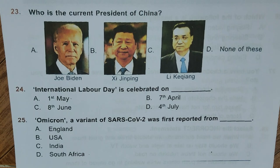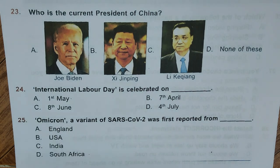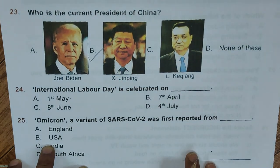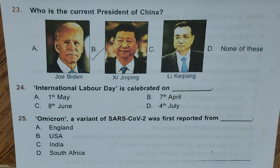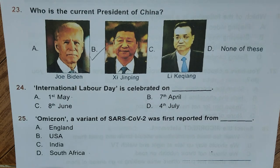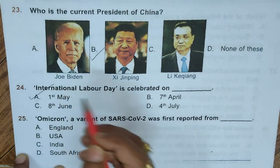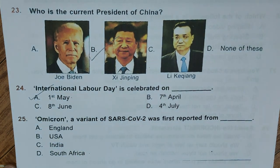Question 23: Who is the current President of China? A. Joe Biden, B. Xi Jinping, C. Li Keqiang. Correct answer is B, Xi Jinping. Question 24: International Labour Day is celebrated on — A. 1st May, B. 7th April, C. 1st June, D. 4th July. Correct answer is A, 1st May.